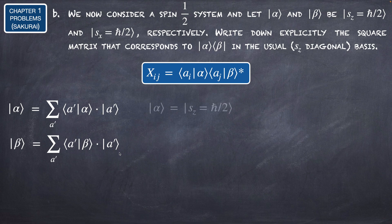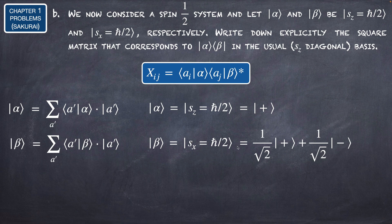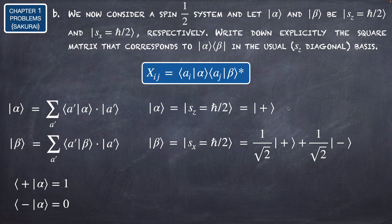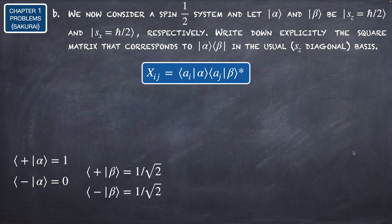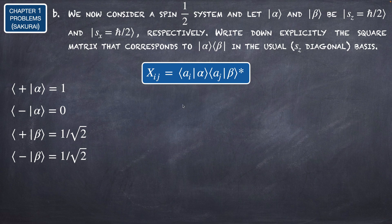We know that alpha and beta can be written as linear combinations in the S_z basis. In our case alpha is |S_z = ℏ/2⟩, which we write simply as the ket |+⟩. For beta, |S_x = ℏ/2⟩, we know that this ket is 1/√2 times |+⟩ plus 1/√2 times |−⟩. Thinking about the coefficients: alpha_+ equals 1, alpha_− equals 0 — there is no minus component in alpha. For beta, beta_+ equals 1/√2 and beta_− also equals 1/√2.